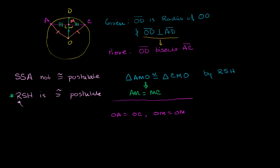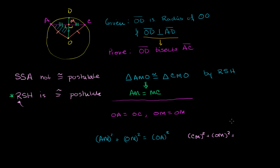From the Pythagorean theorem, for triangle AMO: AM² + OM² = OA². And for triangle CMO: CM² + OM² = OC². These give us the relationship between the legs and hypotenuse for each right triangle.